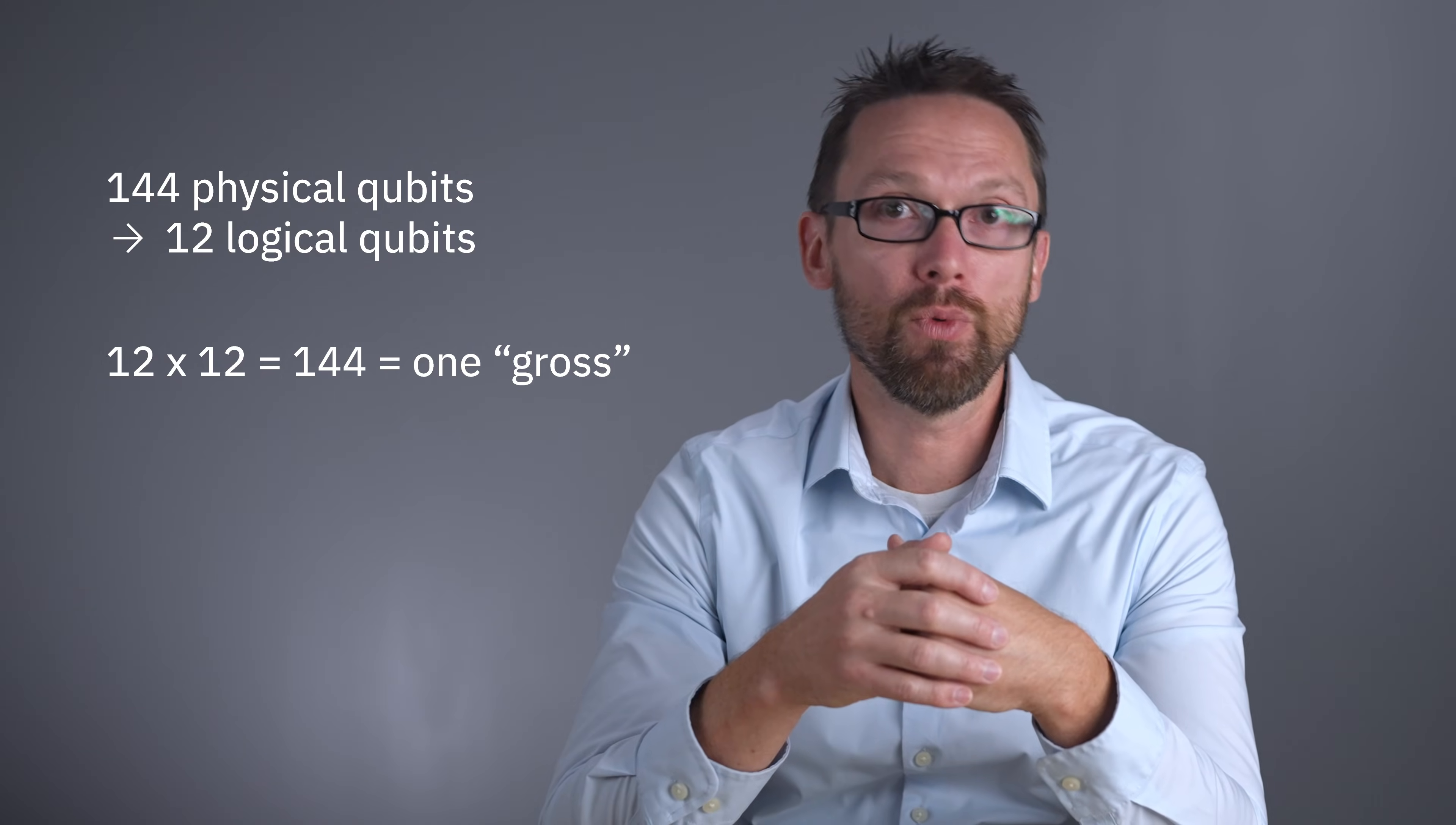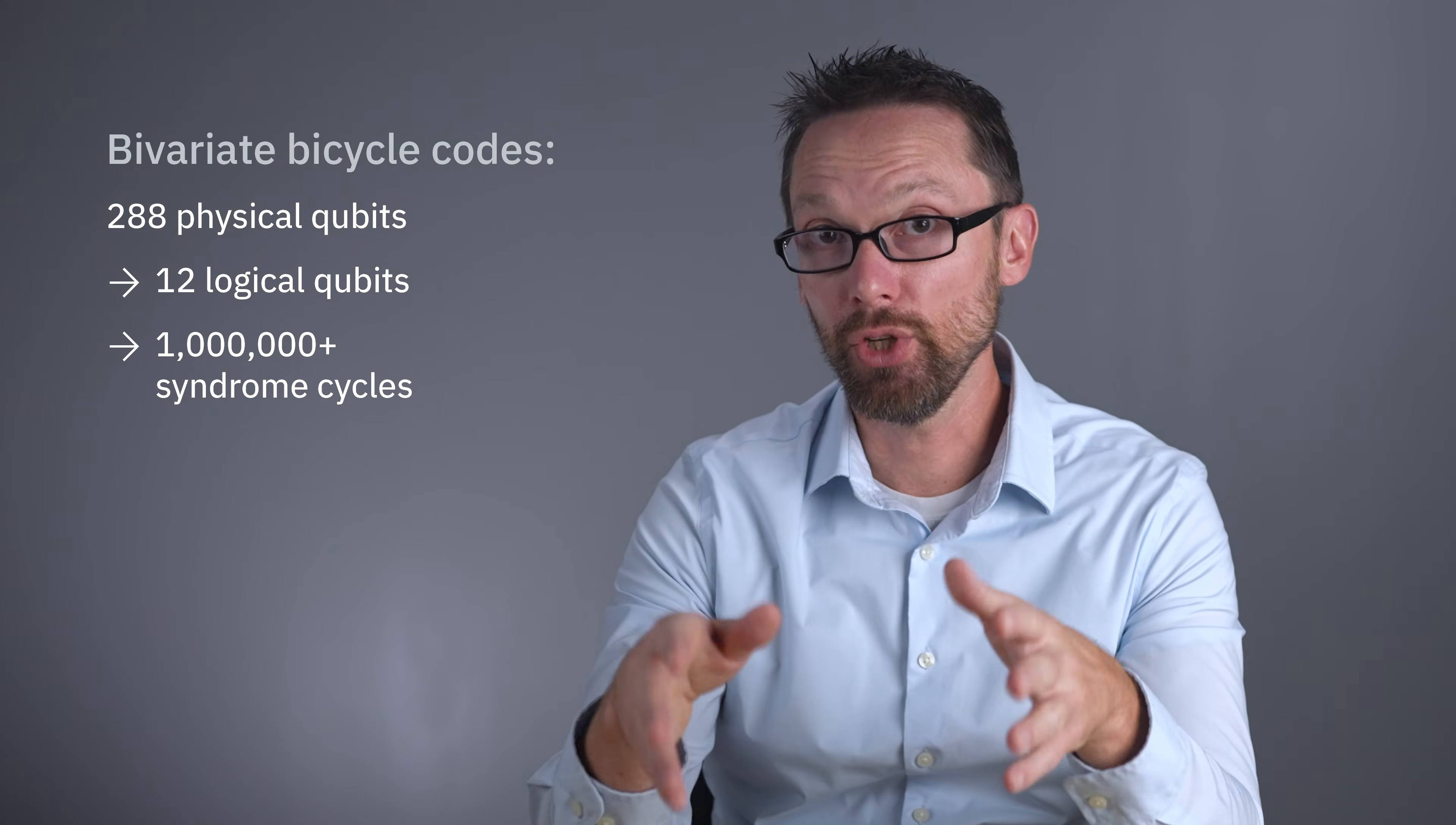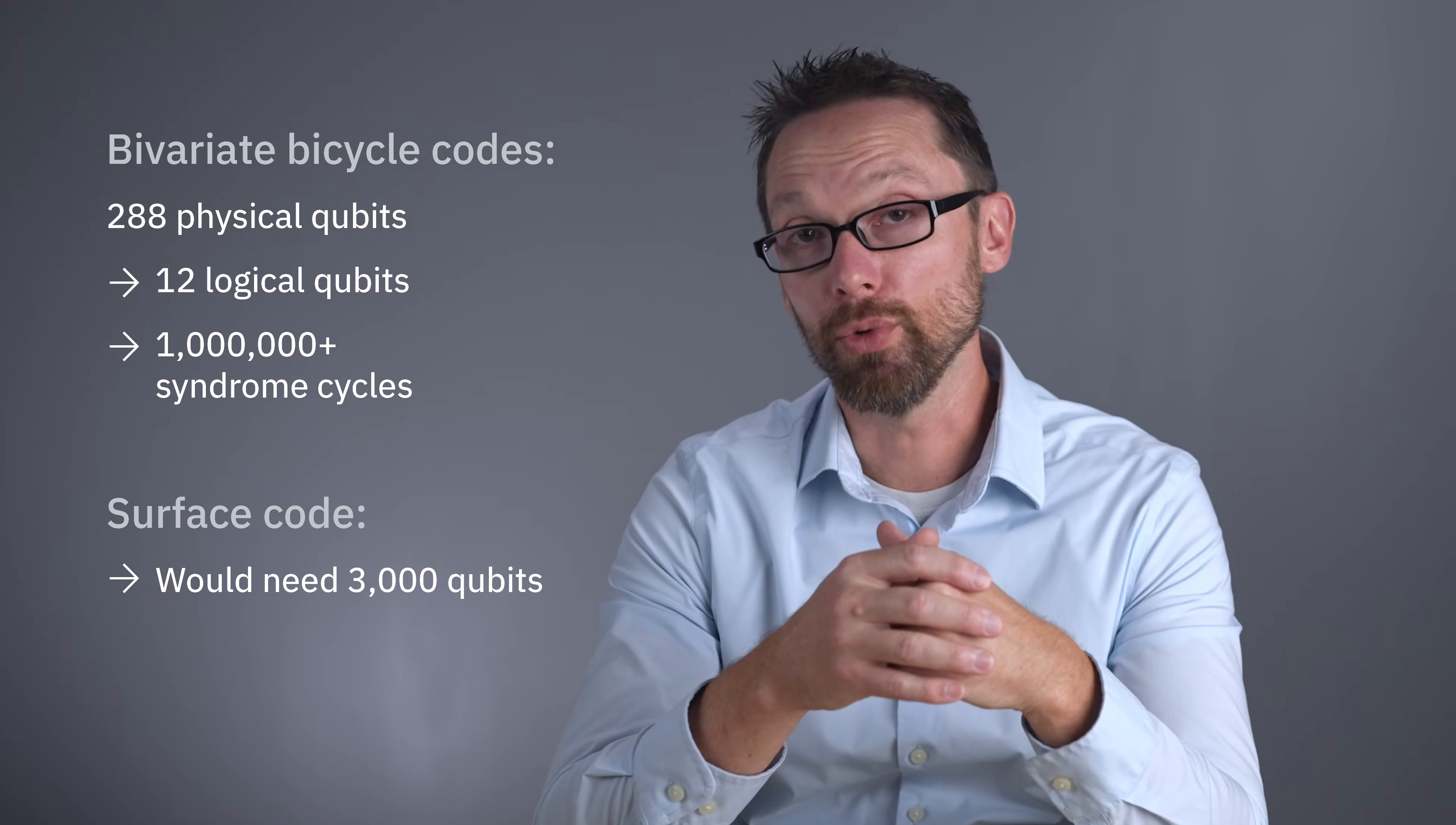One needs additional qubits to perform logical checks, or syndrome measurements. These additional qubits are shown as x-check and z-check qubits in the Tanner graph. With these 288 physical qubits, the code can, in principle, protect 12 logical qubits for on the order of a million syndrome cycles. To achieve the same with a surface code would take almost 3,000 qubits, an order of magnitude more than the gross code.